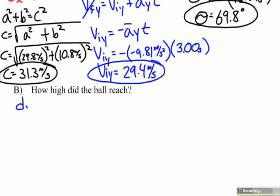Moving down below, we're asked how high the ball reaches. So, they're asking the displacement in the y direction. I know my average acceleration in the y direction is negative 9.81 meters per second squared, and I know that my initial velocity in the y direction is 29.4 meters per second, because we found that before.